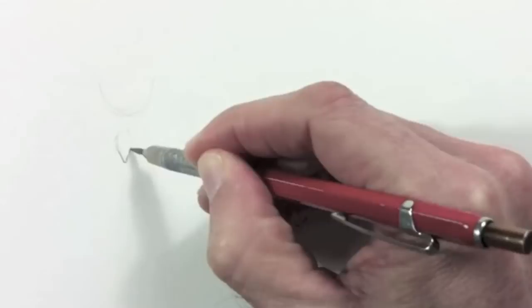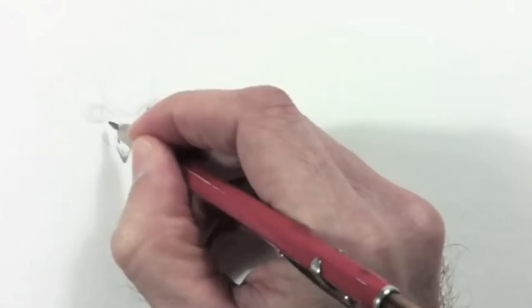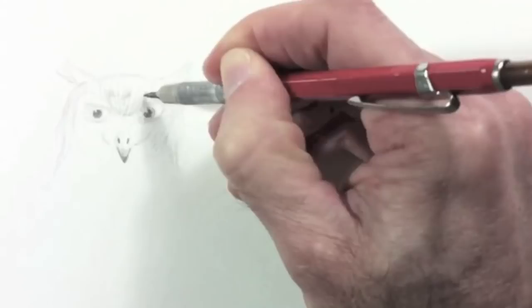And to shade something totally different, like the feathers of an owl, I will sketch it with short and soft lines, to try to give that texture.